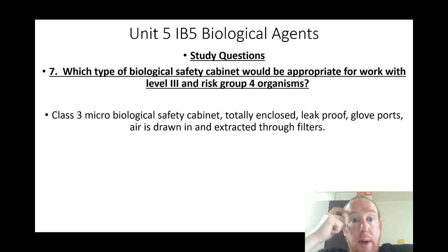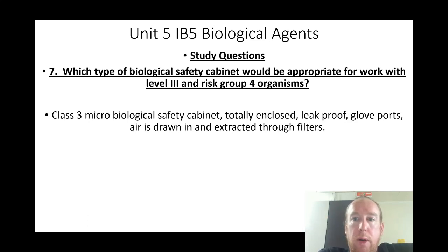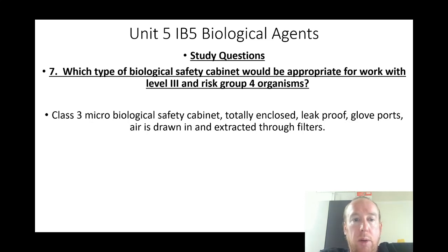Which type of biological safety cabinet would be appropriate for work with level 3 and risk group 4 organisms? A Class 3 microbiological safety cabinet — totally enclosed and leak-proof with glove support; air is drawn in and extracted through filters.